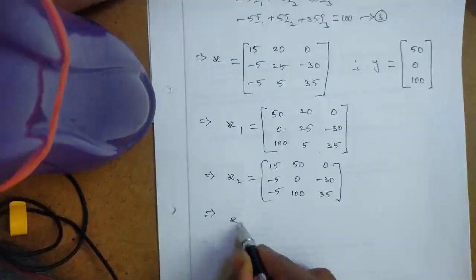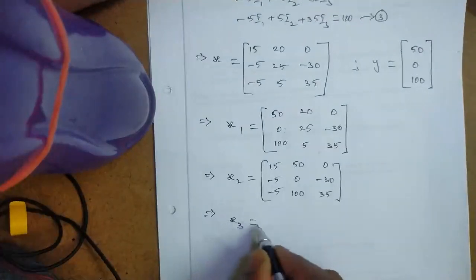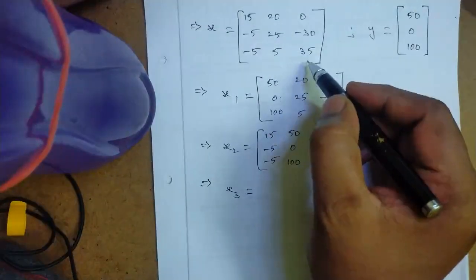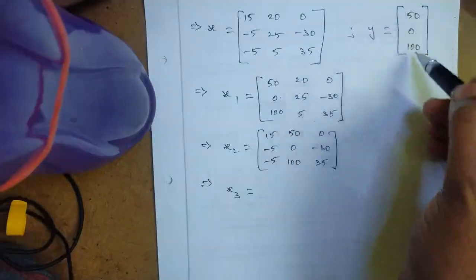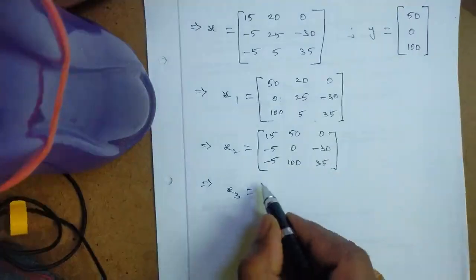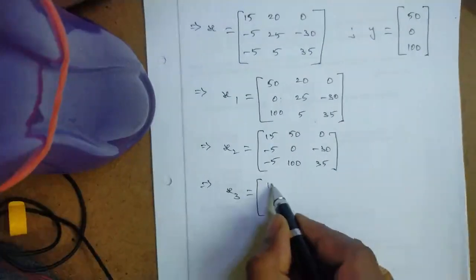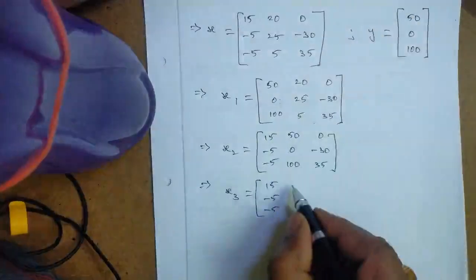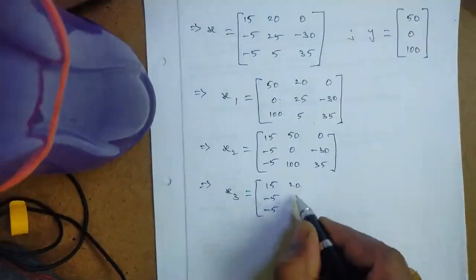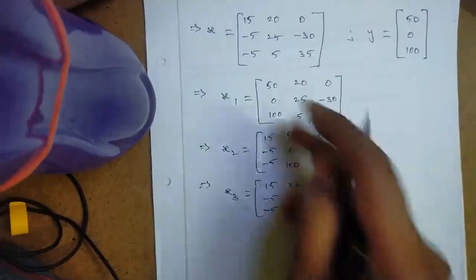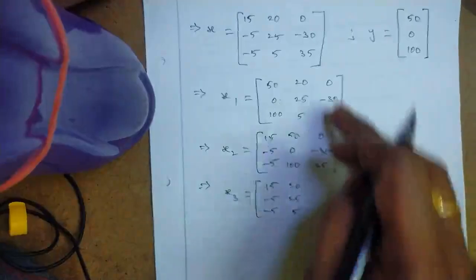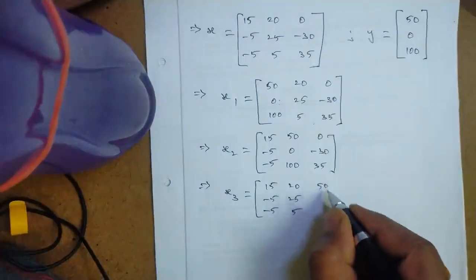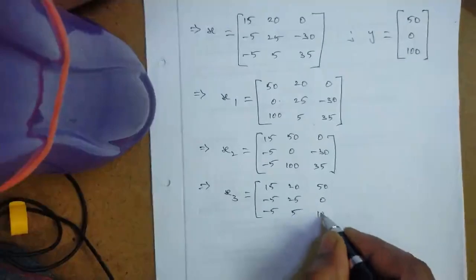Similarly, matrix X3 is formed by replacing the third column of matrix X with Y. The first two columns remain as is: minus 5, minus 5, 20, 25, 5. The third column becomes 50, 0, 100.